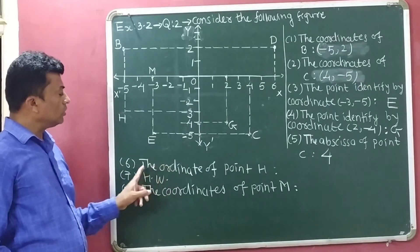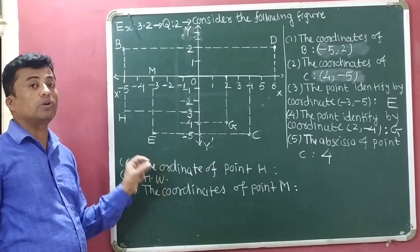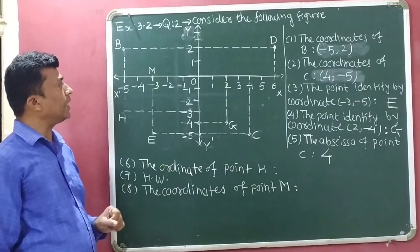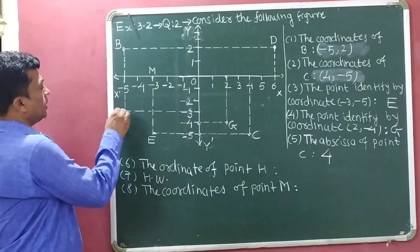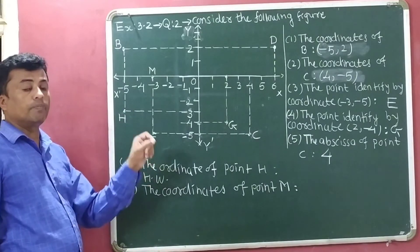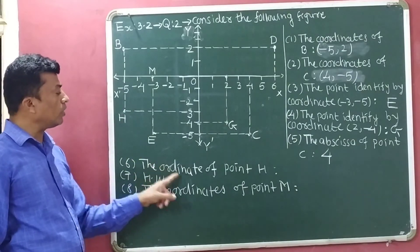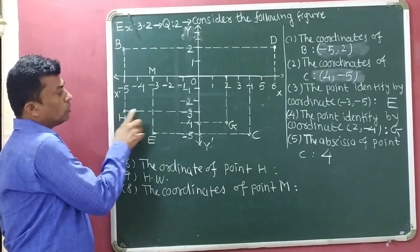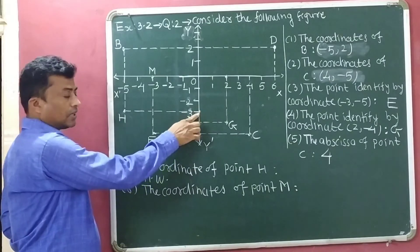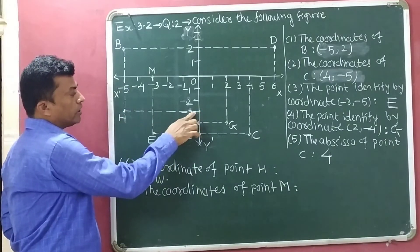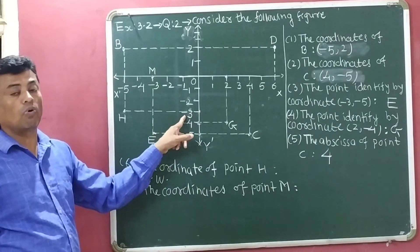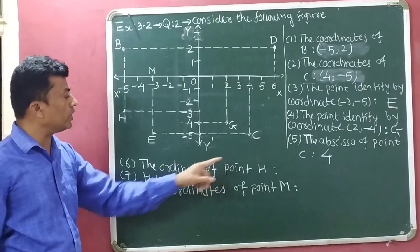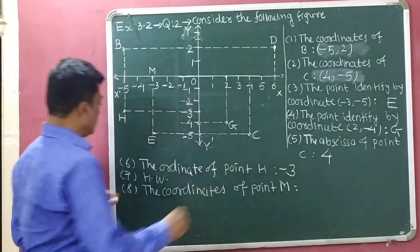Question 6: The ordinate of point H. Ordinate means y-coordinate. Here we have to identify the y-coordinate of point H. Point H is available here. The perpendicular from point H to the y-axis touches at minus 3. So, minus 3 is the ordinate or y-coordinate of point H.